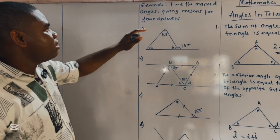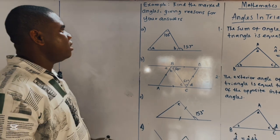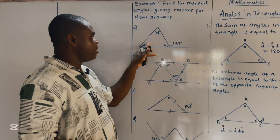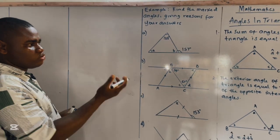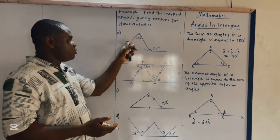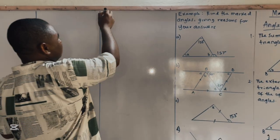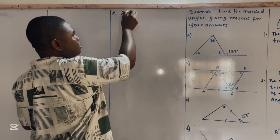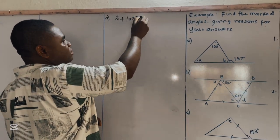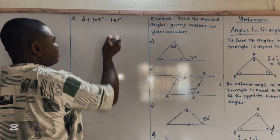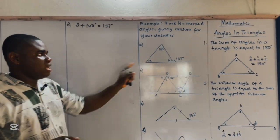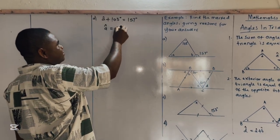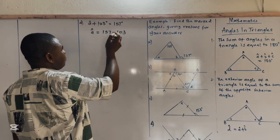For the first example, we have to find the marked angles giving reasons for our answers. To calculate the value of A, we use the rule that the exterior angle is equal to the sum of the two interior opposite angles. It therefore means that 103 degrees plus A equals 157 degrees, so angle A is equal to 157 minus 103 degrees.